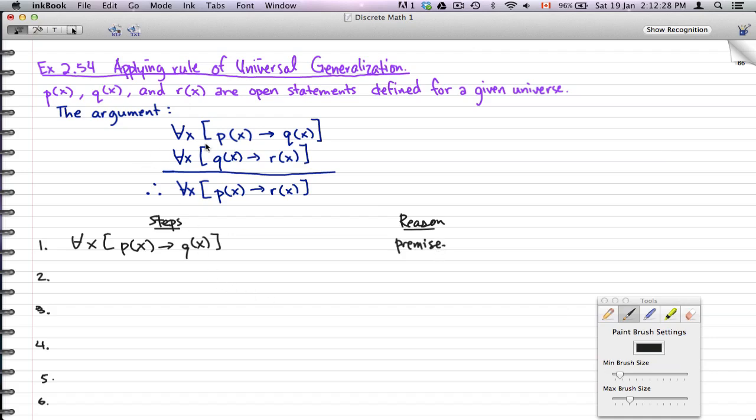And we're going to use some arbitrary statement, let's say c. So we're going to use p(x) → q(x). So it's just some arbitrary element that fits into, that makes this statement true, because it must be,